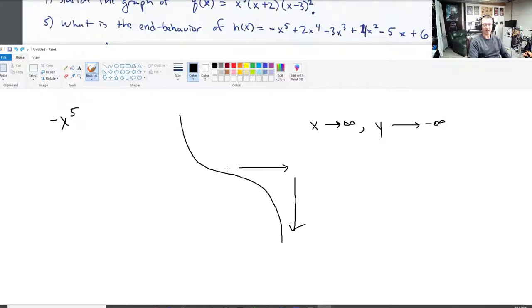What's the other end behavior? Well, as x goes to negative infinity, which means if I plug in more and more negative numbers, like negative a billion, negative a trillion, negative a Google, if I plug in bigger and bigger negative numbers, what happens to my height?